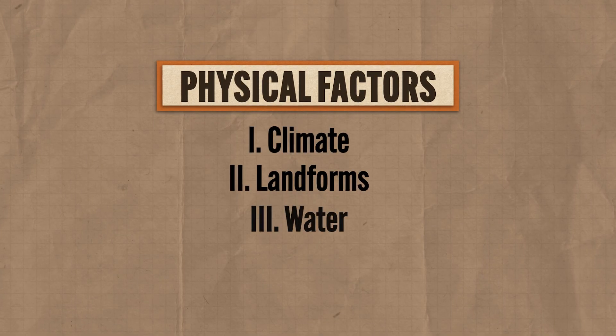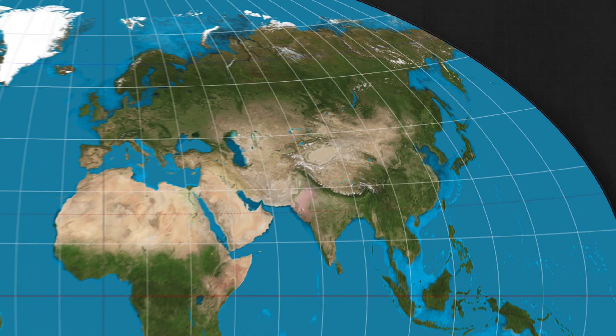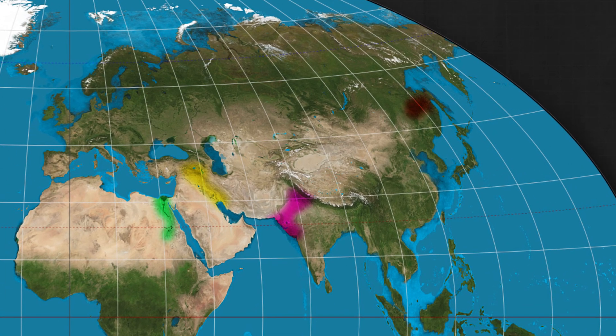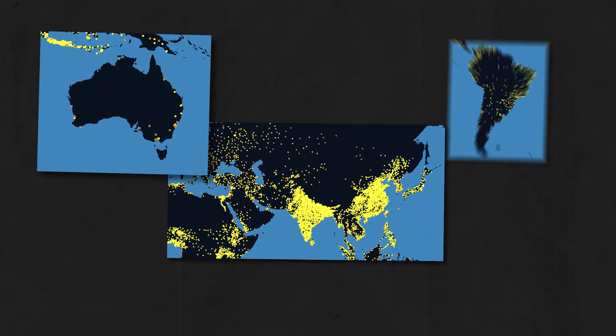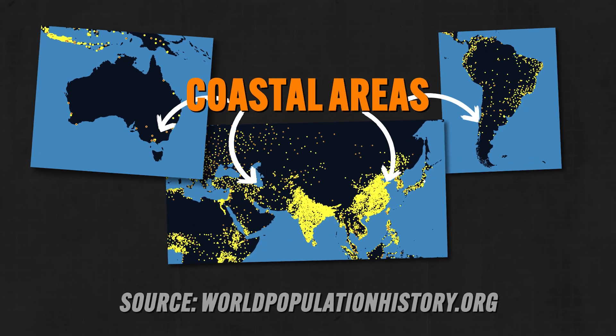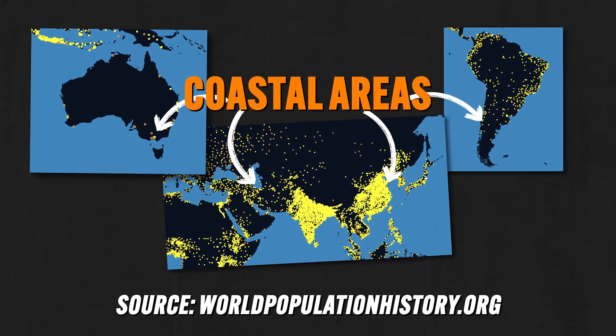Water is another physical factor that affects distribution. For most of human history, populations cluster around bodies of water like rivers and coastal areas. Without water, you're dead. But also, living near water means access to trading routes, many of which have existed from time immemorial. For example, most of the populations in Eurasia, Australia, and South America live around the coastal areas and not so much in the interior where water is more scarce and the climate is pretty extreme.